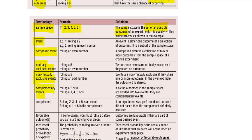Complementary events: if all the outcomes in the sample space are divided into two events, they are complementary events. For example, with a dice, the first event might be getting a two or a three, and the second event would be rolling everything else — one, four, five, and six.